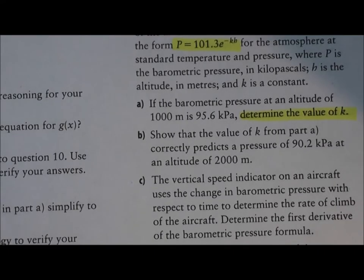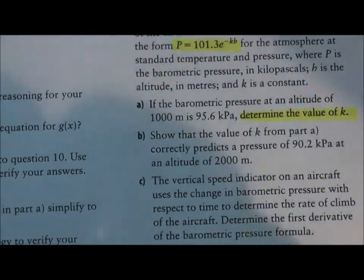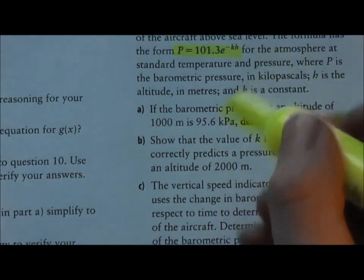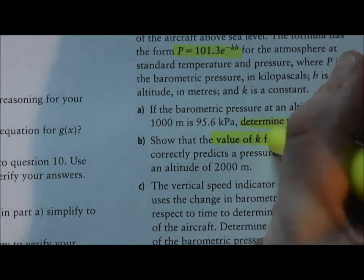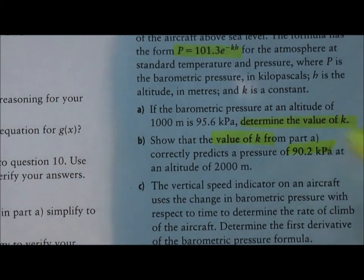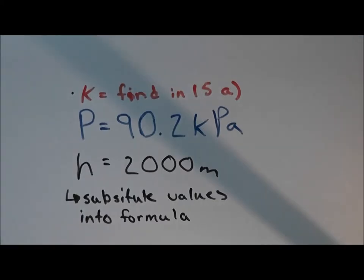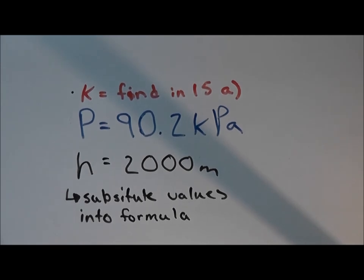In 15b, we are trying to prove that the value that we determined in 15a, the value of k, is correct. And we are given the pressure and we're given the altitude. Therefore, because we're given enough information, we simply have to substitute in these values into the formula to determine if our value of k from question 15 is correct.